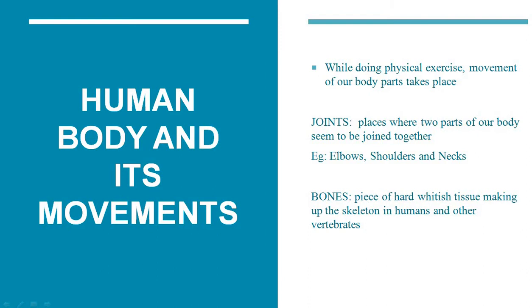A joint is a place where two bones meet or where two parts of the body are meeting — examples include elbow, shoulder, and neck. Bones are parts of the skeletal system which are hard and which are made up of strong white tissues.